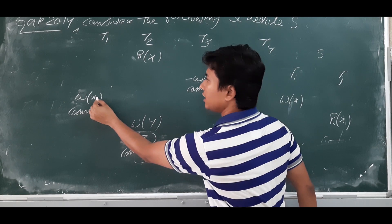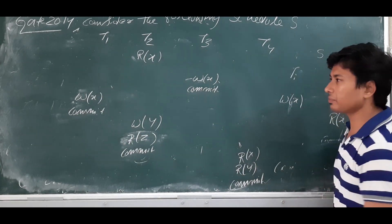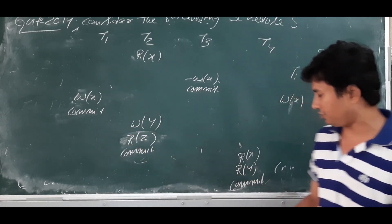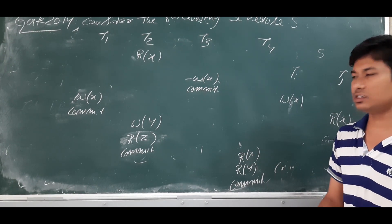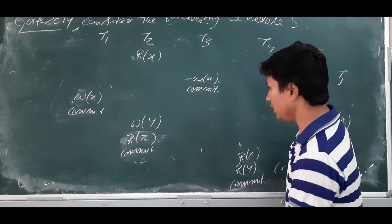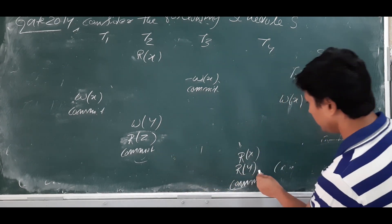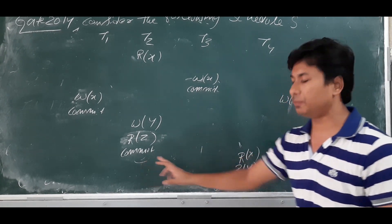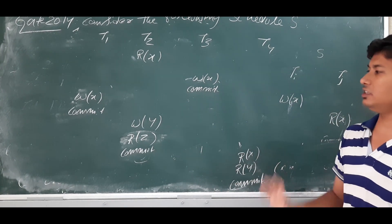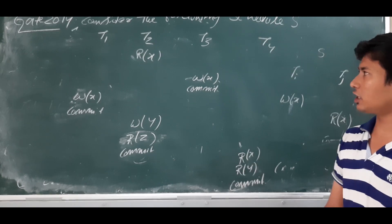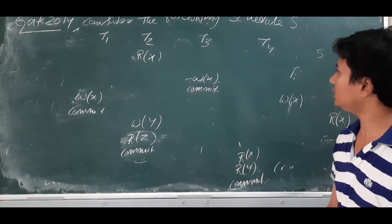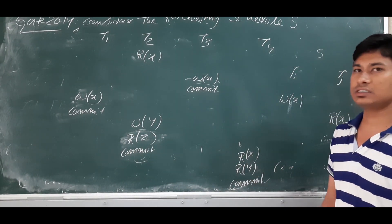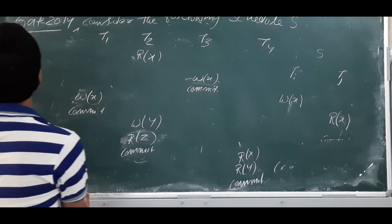There is also another W(x) and R(x) pair where T1 writes x and T4 reads it. T1 commits before T4, so the commit sequence is correct. Then there is W(y) in T2 and R(y) in T4. T2 commits before T4, so this write-read sequence also follows the recoverable schedule. We have only three writes, so all write-read sequences have been checked. The given schedule is a recoverable schedule.